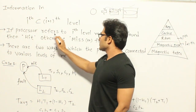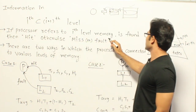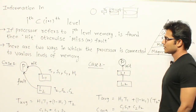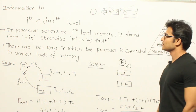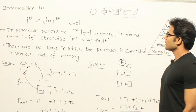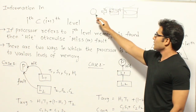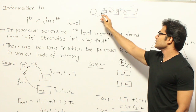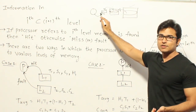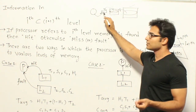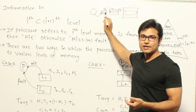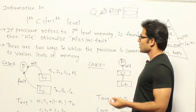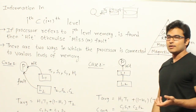If the processor refers to the i-th level memory and the item is found, then it is called a hit. Otherwise, it is called a miss. If you are trying to search for a byte in the cache and it is present there, then it is called a hit. If it is not present, then it is called a miss.